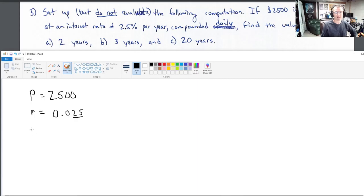Okay. Compounded daily. Okay. So, that means N is 365. And then for parts A, B, and C, we're going to have different amounts of T. So, part A has T equals 2. For part B, we're going to have T equals 3. And for part C, T equals 20.